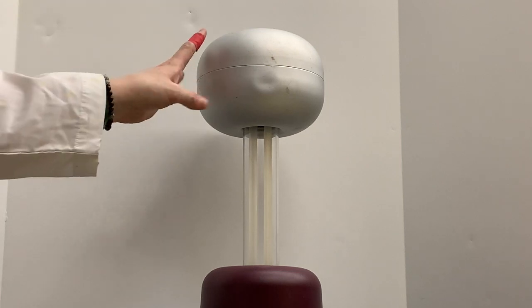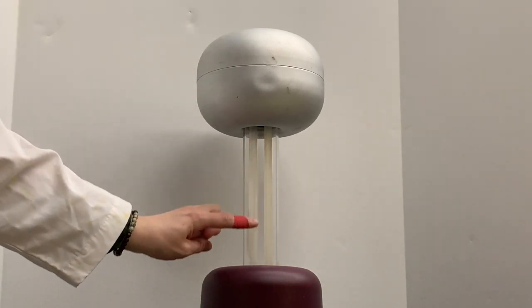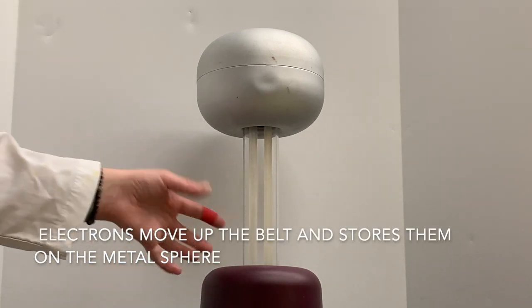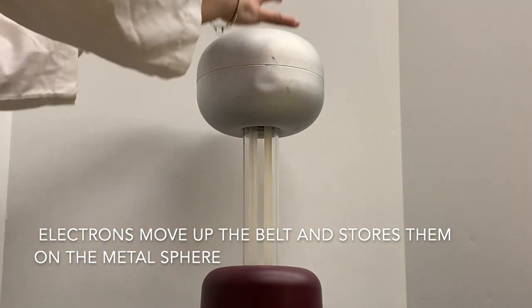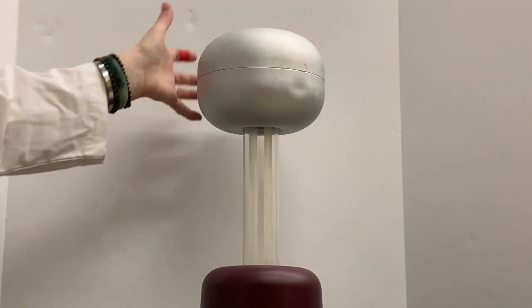This is a Van de Graaff generator. What happens here is you have a belt that comes down and is driven by a motor. It collects the electrons at the bottom and brings them up. There's a comb at the top, so the sphere at the top takes all the electrons and spreads them.